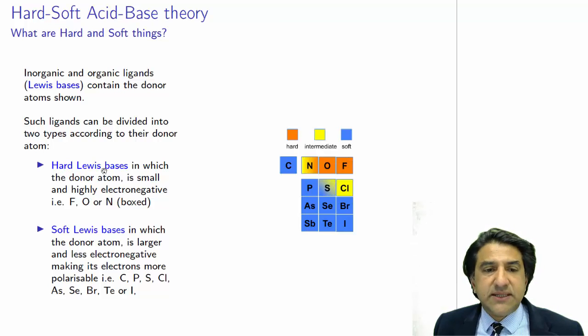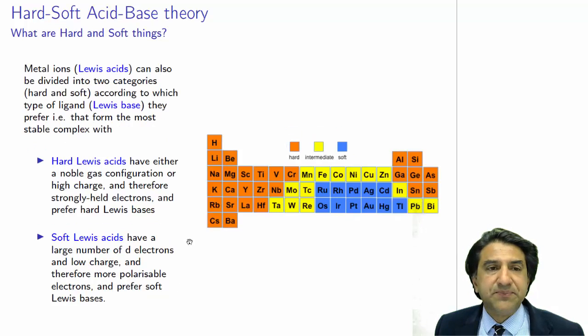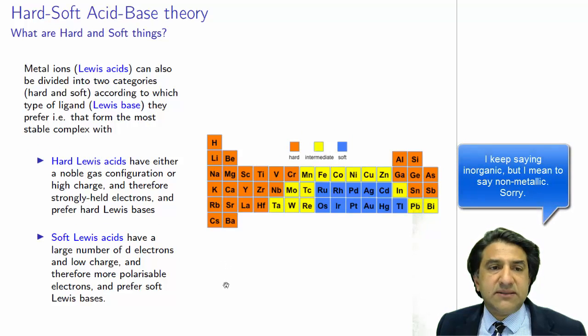And that's what this says, hard Lewis bases. Lewis bases are electron donors. If they are donors at all, they hold on the electrons pretty tightly. Hard Lewis bases, in which the donor atom is small and highly electronegative, F-O-N, those are hard Lewis bases. Soft Lewis bases are all the other ones. So that was the inorganic species.